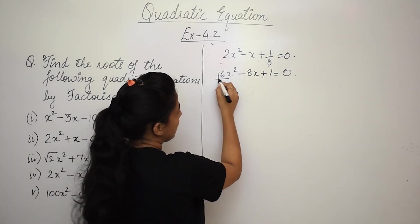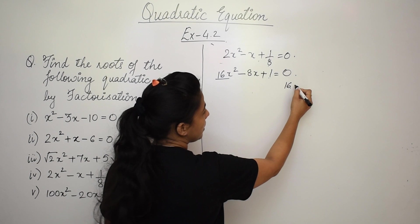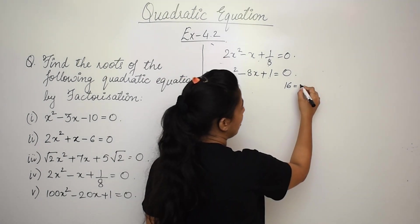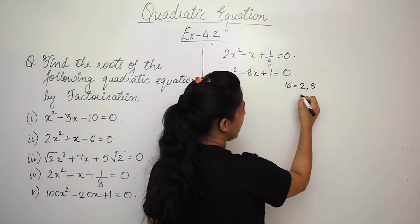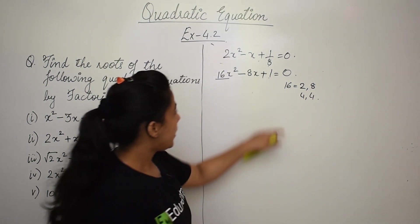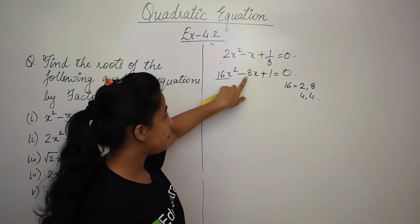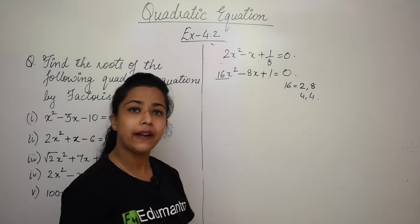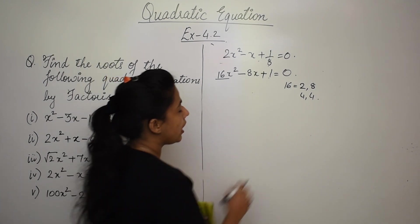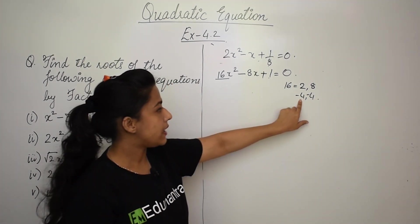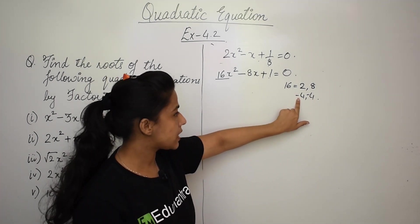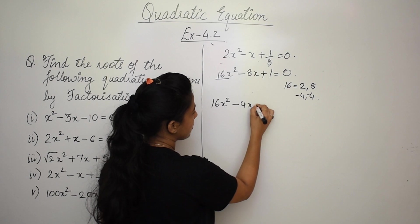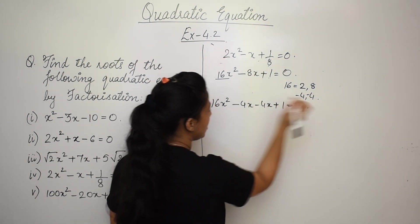The factors of 16 include 2×8 and 4×4. Since the product must be +16 and the sum must be -8, both numbers must be negative. Taking -4 and -4: (-4)×(-4) = 16 and (-4) + (-4) = -8. So the equation becomes 16x² - 4x - 4x + 1 = 0. Taking 4x common gives 4x(4x - 1), and -1 common gives -1(4x - 1). So (4x - 1)(4x - 1) = 0.